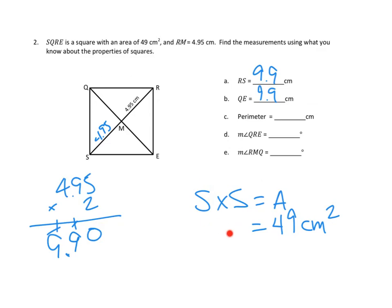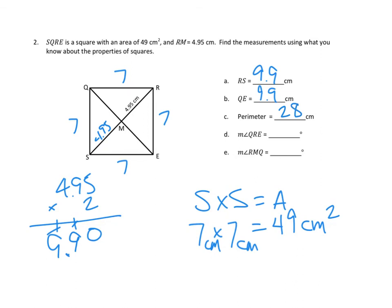Would 5 times 5 do it? No, that's 25 — not big enough. How about 6 times 6? No, that's 36 — not big enough. 7 times 7! If one side were 7 and the other side were 7, that gives us 49. 7 centimeters times 7 centimeters equals 49 centimeters squared. So all four sides are 7. The perimeter is 7 plus 7 plus 7 plus 7 — that's 4 times 7 — which equals 28 centimeters.